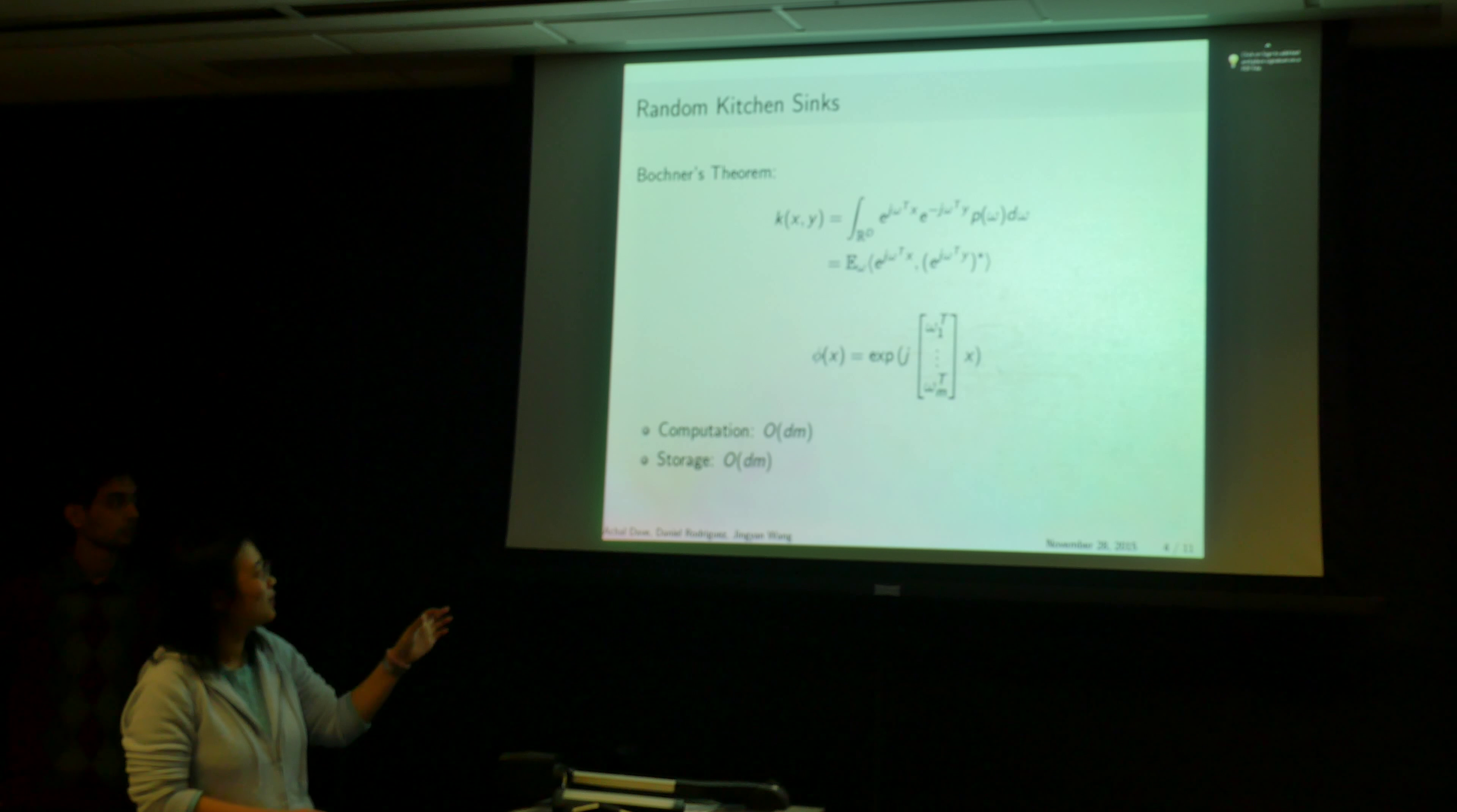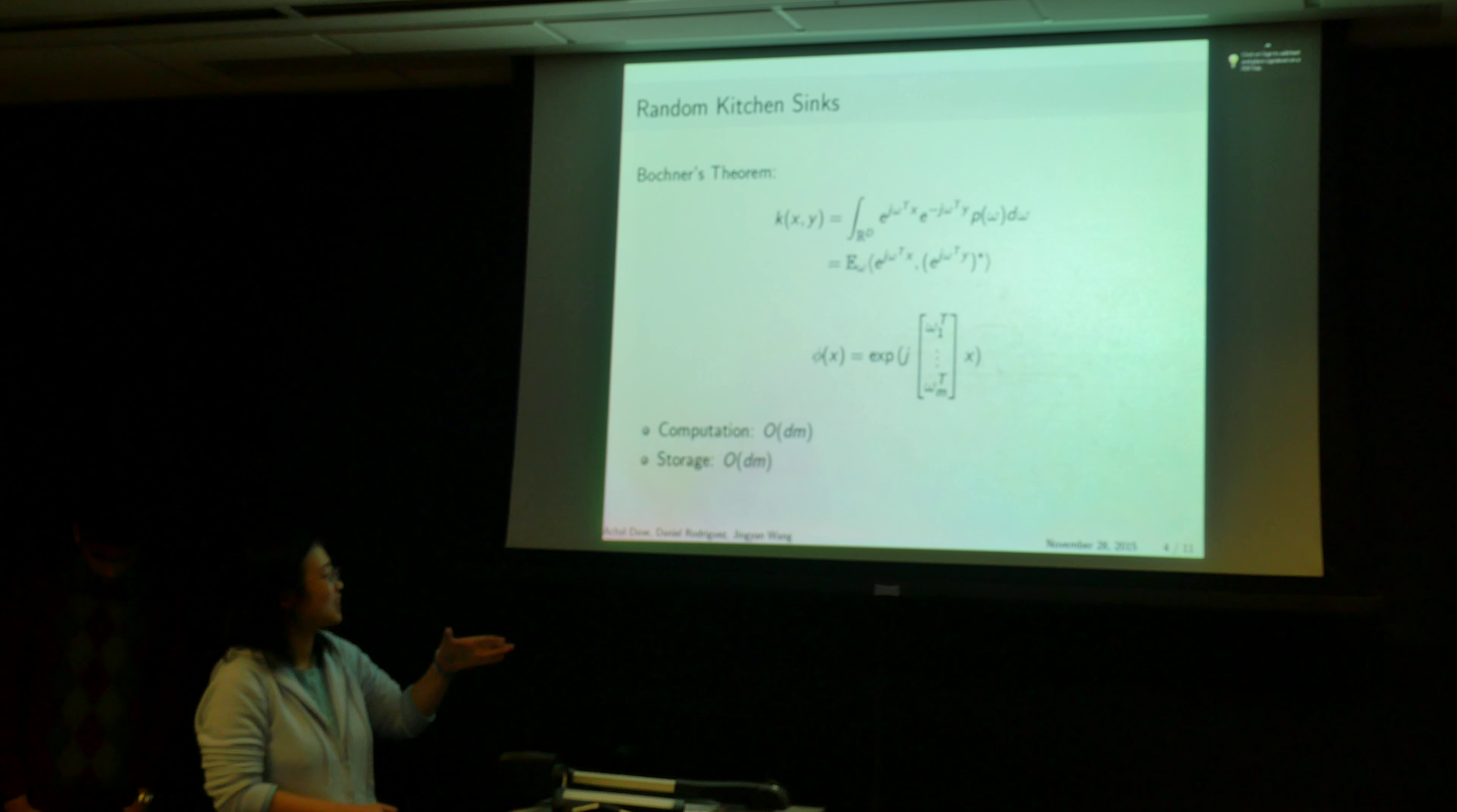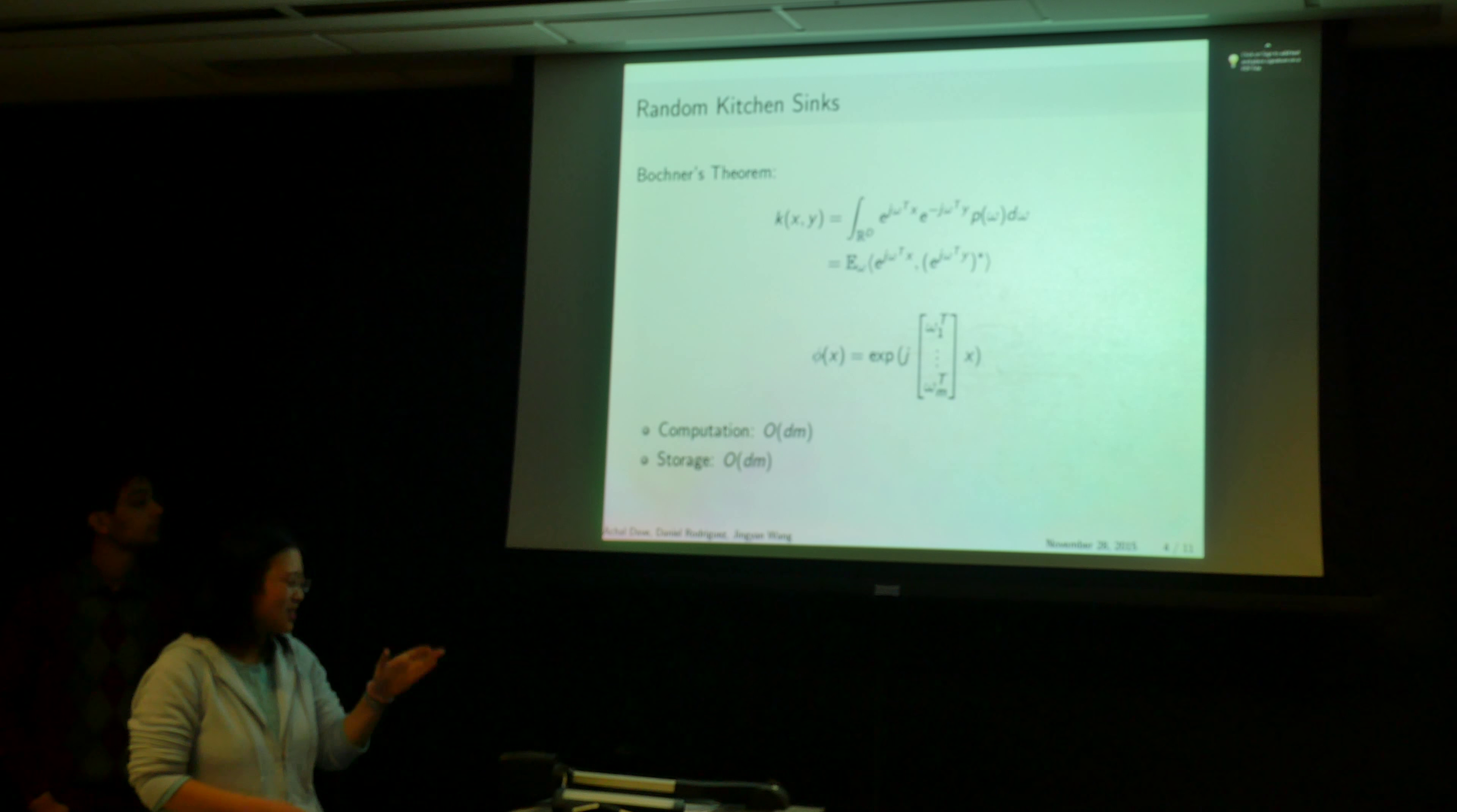And in the case of Gaussian kernels, the Fourier transform of Gaussians are Gaussian. So we randomly sample Gaussian vectors from omega 1 to omega m of D dimension. We compute this feature vector. And because now we have a finite dimensional feature vector, we can directly learn a hyperplane as our decision rule, in which case we do not depend on the size of the training system.